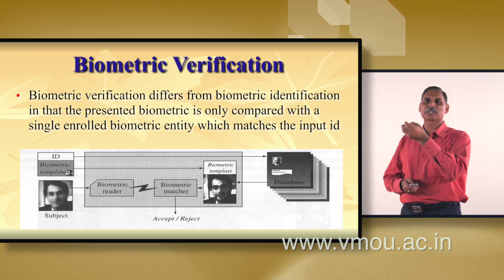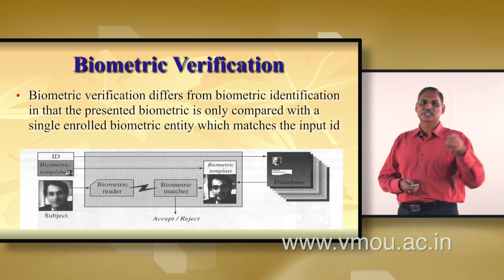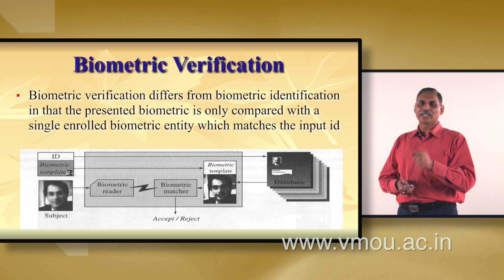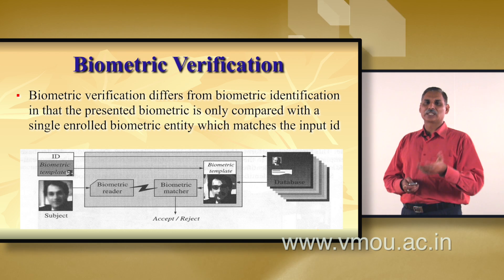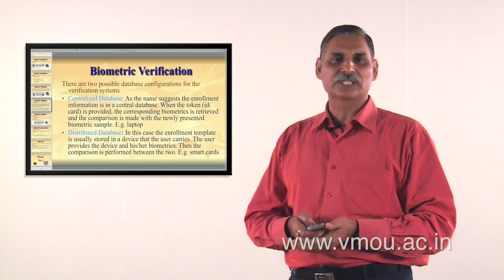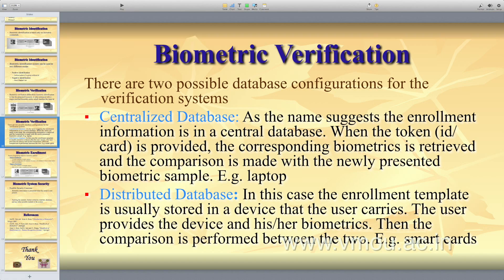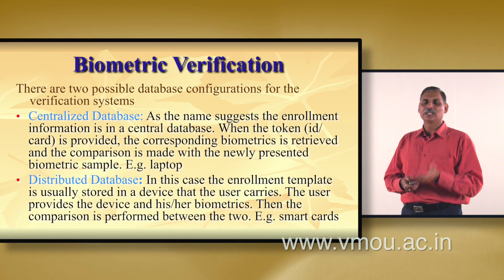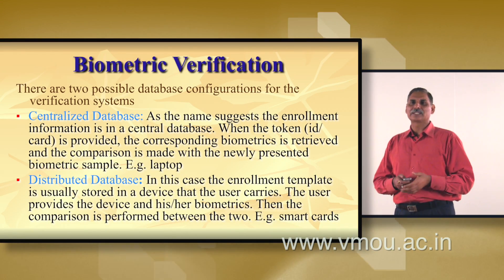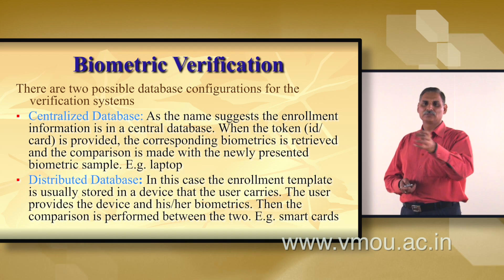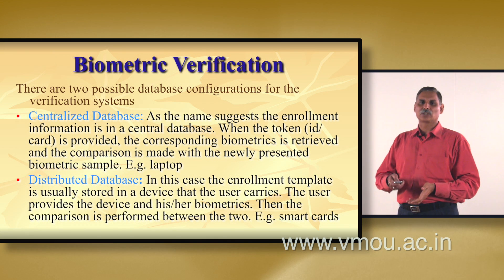The information of a single person from the database is matched against the information coming in through the reader and extractor, and based on this matching, the system accepts or rejects the person. For verification, there are two possible database configurations: a centralized database or a distributed database. Depending on the application, cost, and time requirements, one can choose either option. In a centralized system the entire system shares one database; in a distributed system each subsystem may have its own database attached.